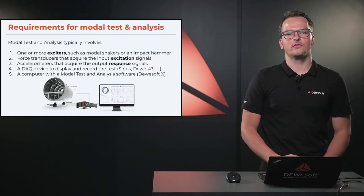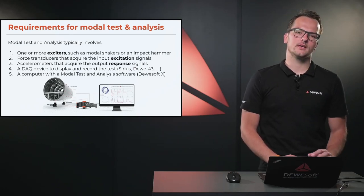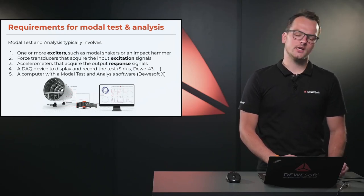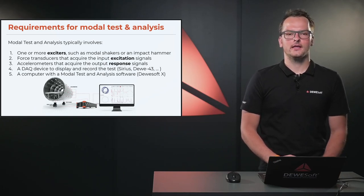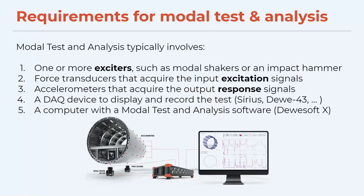What do we need to perform a modal test and analysis? At the beginning we need an exciter to excite the structure — this can be a modal shaker or an impact hammer, depending on the application. We need to take into account what kind of structure we are testing, what the frequency range is, and so on. We also need force transducers to acquire the excitation signal, and accelerometers to acquire the response signals from the structure.